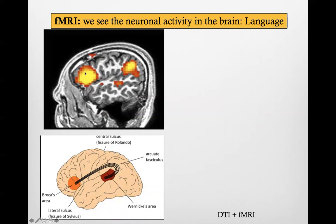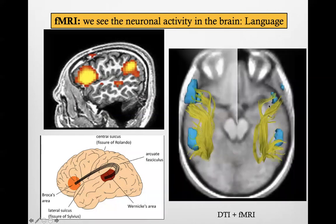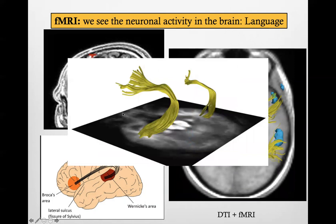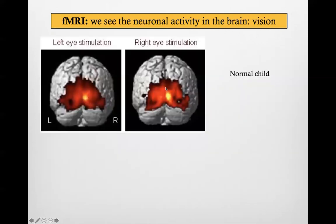Functional MRI picks up the areas of activation of the cortex, while DTI shows the bundle of white matter connecting Broca and Wernicke — this is the arcuate fasciculus in the axial projection demonstrated on DTI. In 3D, of course, the left arcuate fasciculus is bigger than the right. The same can be done with visual activity: left eye stimulation, right eye stimulation in a normal child activate the occipital lobes, which control vision.